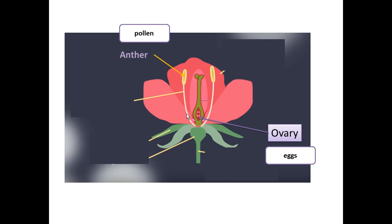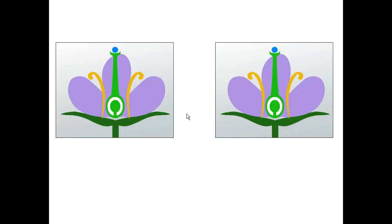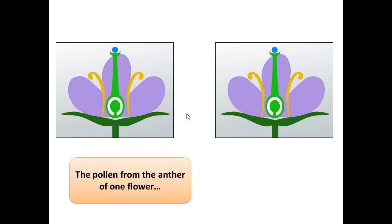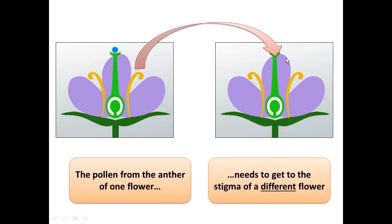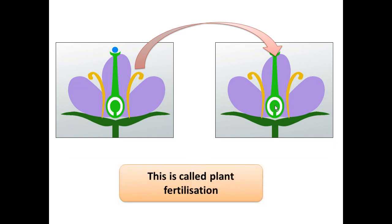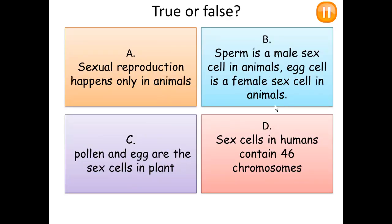So in plants, the male sex cell is called pollen and the female sex cell is called egg. For fertilization to happen in plants, the pollen released from the anther of one flower needs to travel to the stigma — the upper part of the carpel — of a different flower. In this way, the pollen reaches the egg and fertilization in plants can occur.